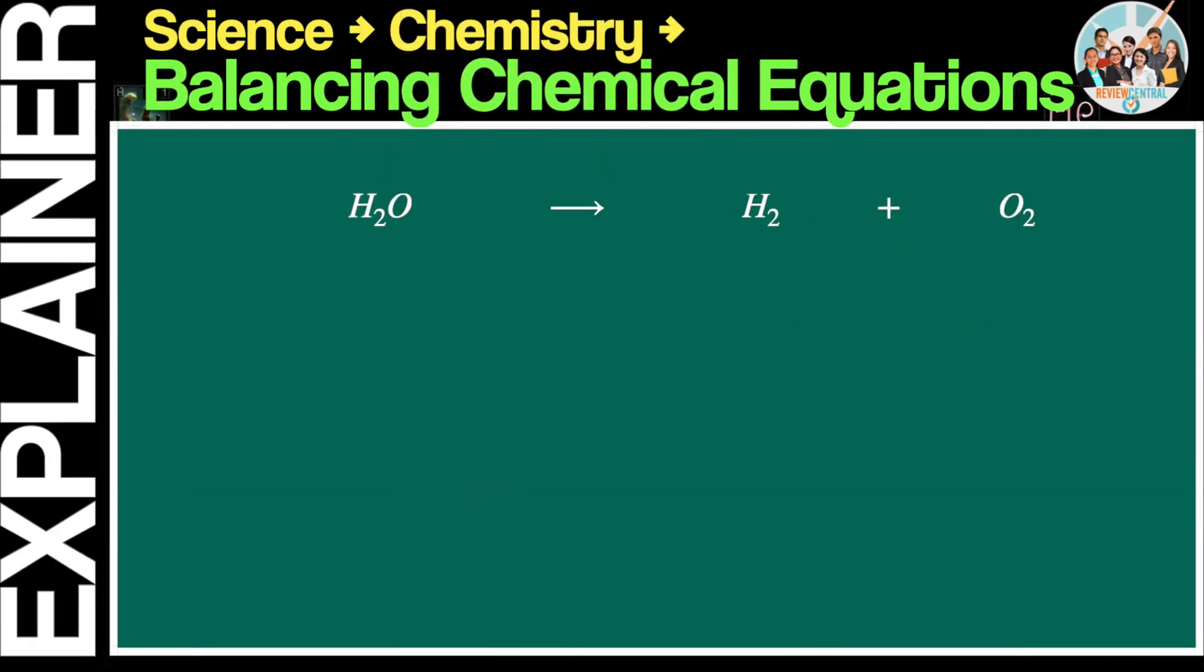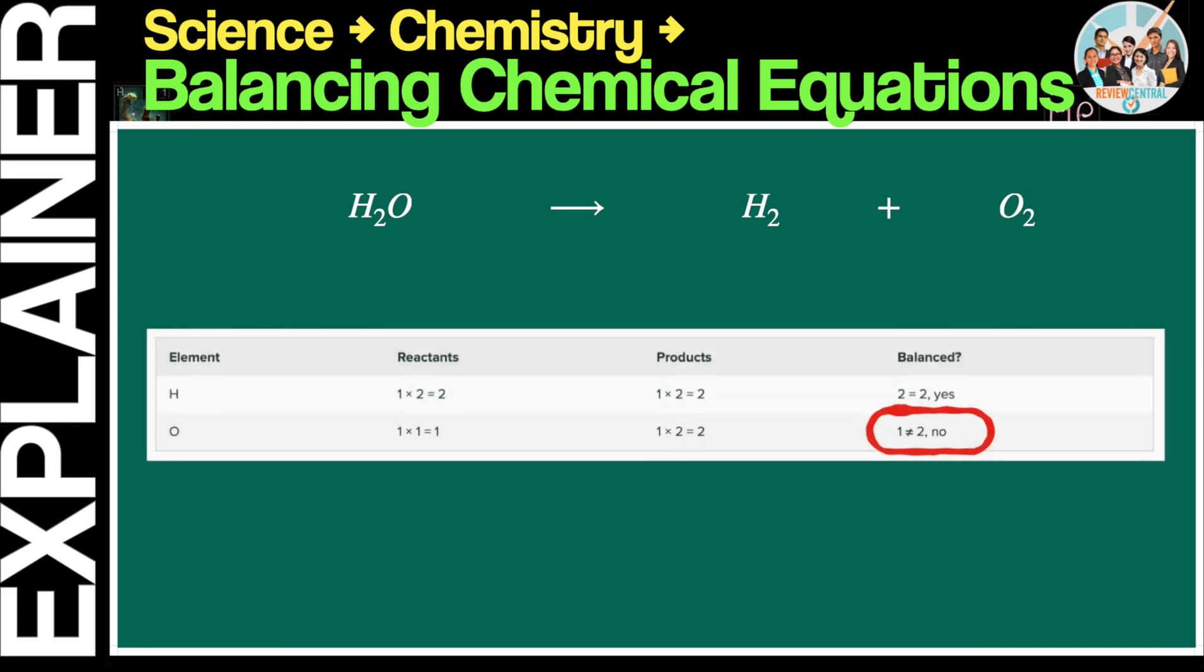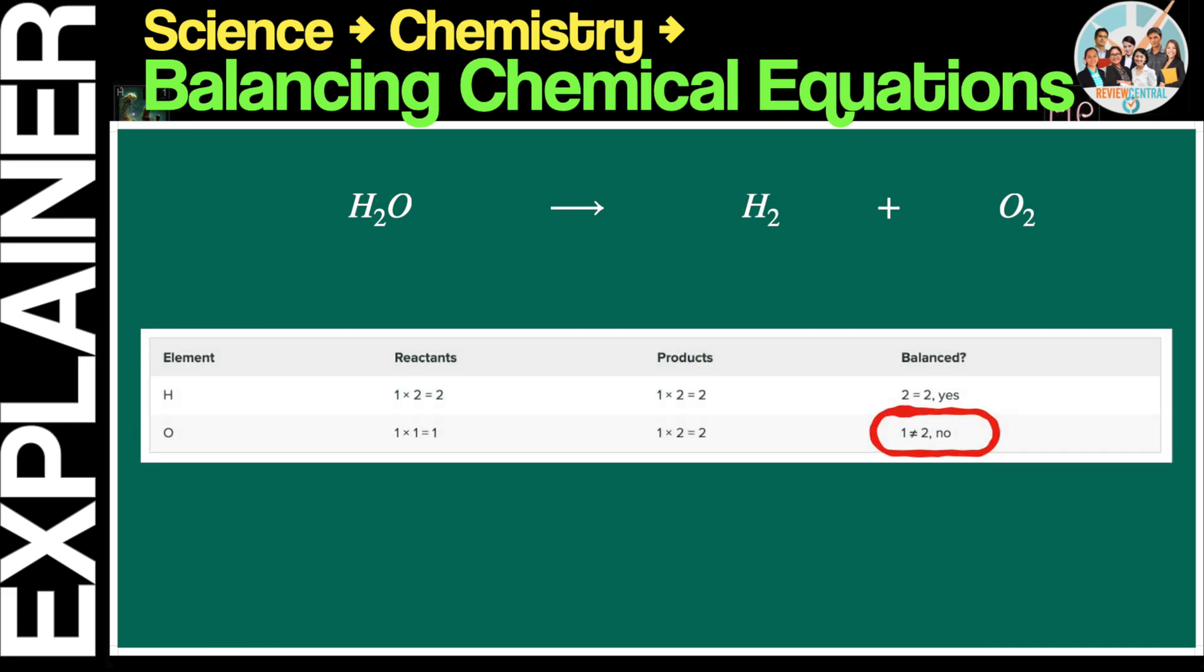Now, let's have an example of an unbalanced equation and proceed to balance it. Let's use our table to inspect the elements and determine which ones are not balanced. Okay, so we can confirm that the equation is not balanced. So how do we balance it?